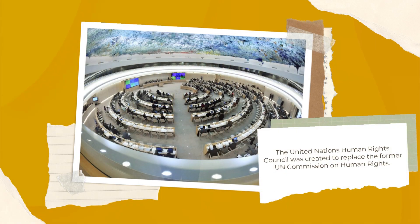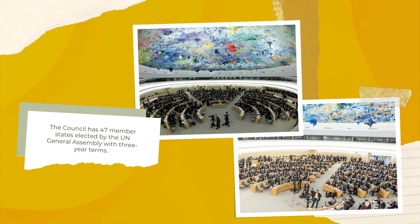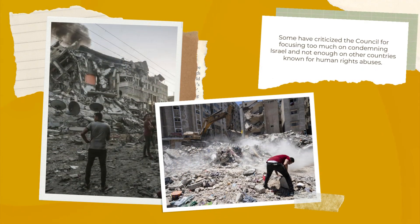The UN's Human Rights Council was created to replace the former UN Commission on Human Rights. The Council has 47 member states elected by the UN General Assembly with three-year terms. Some have criticized the Council for focusing too much on condemning Israel and not enough on other countries known for human rights abuses.